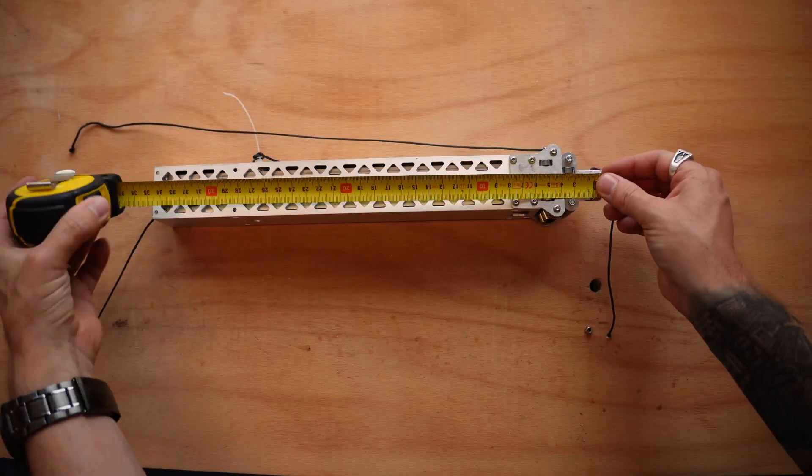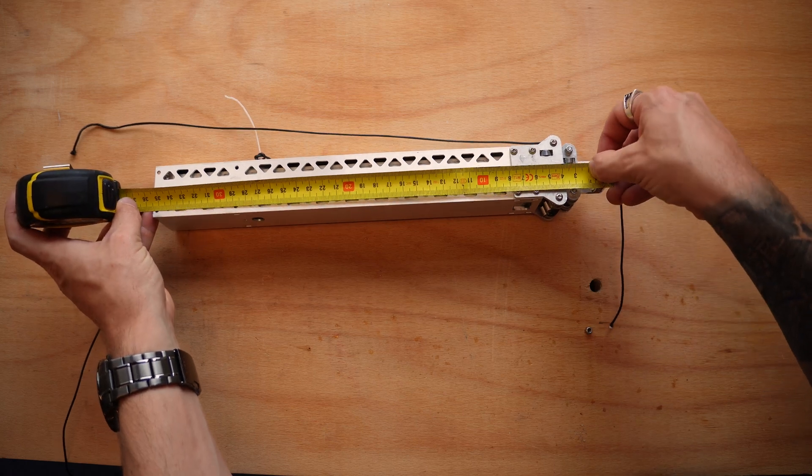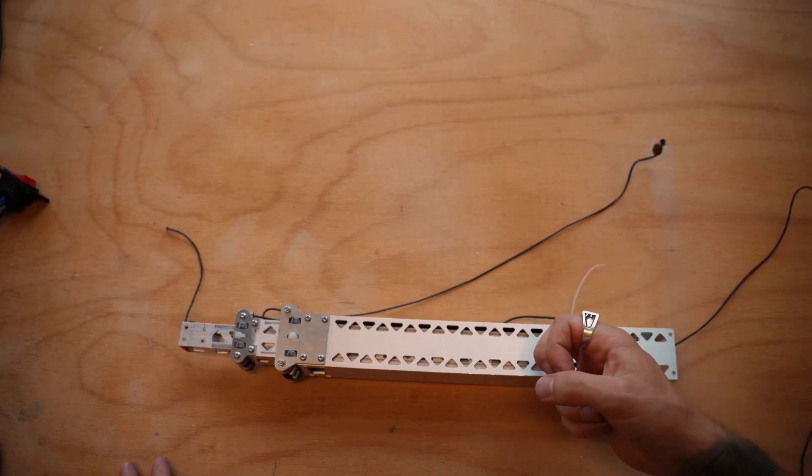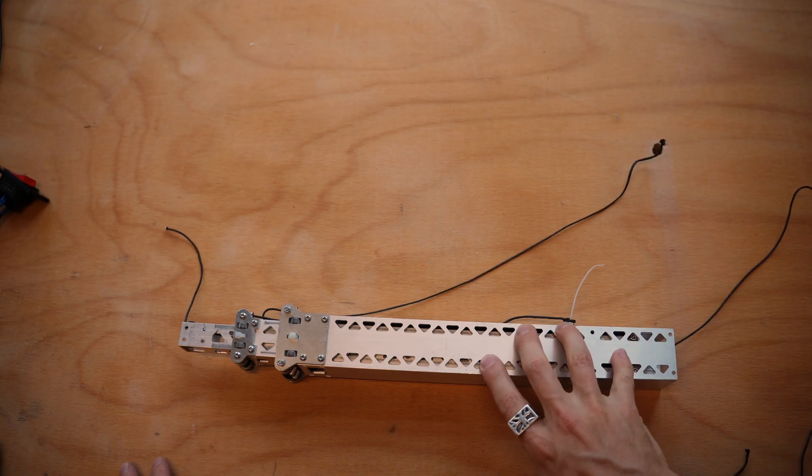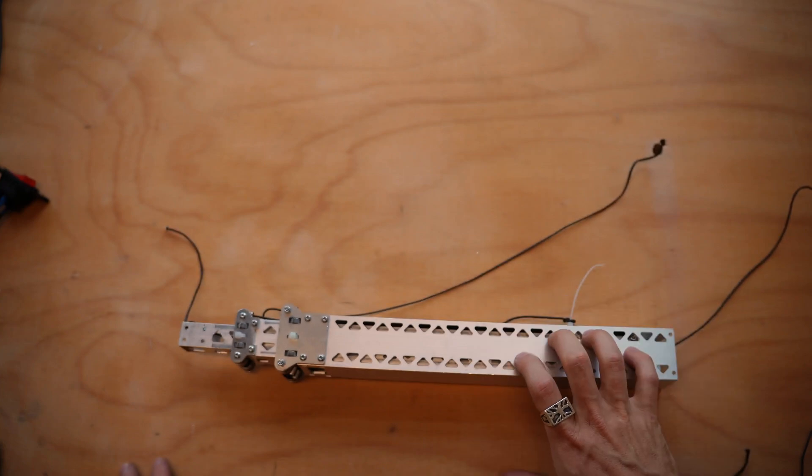When this thing is fully compacted, it is about 35 and a half centimeters long, if we don't bend our tape here. As far as I'm aware, this is the only kit on the market that does a box tube slide or a telescoping elevator in such a small, compact form factor.